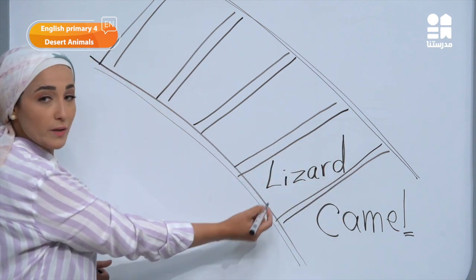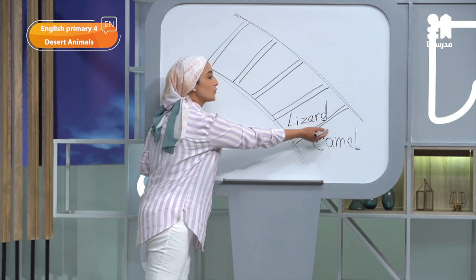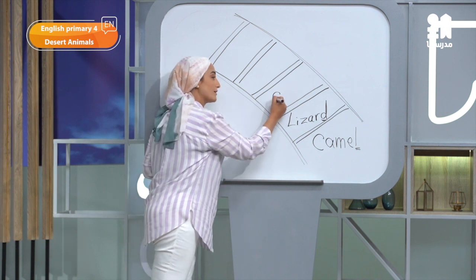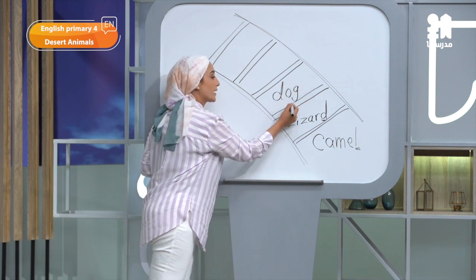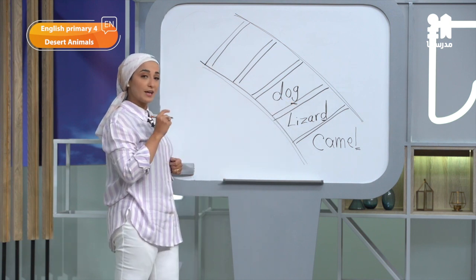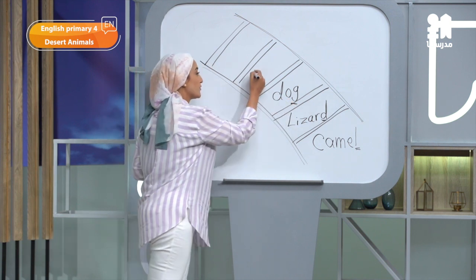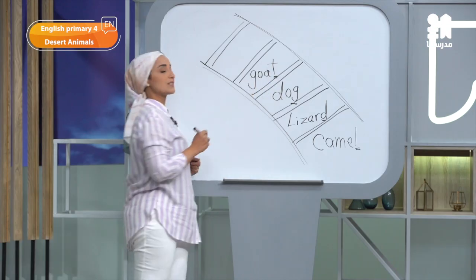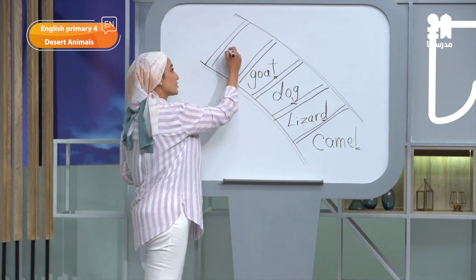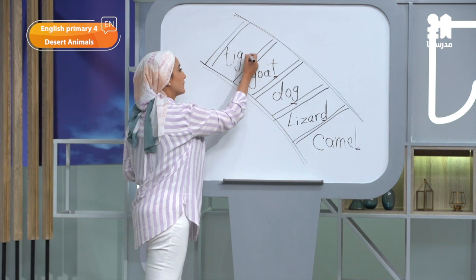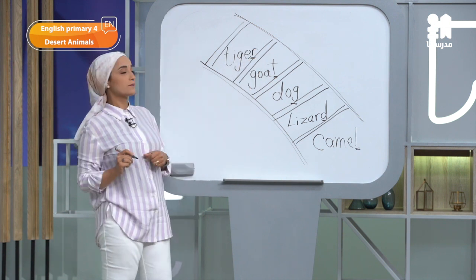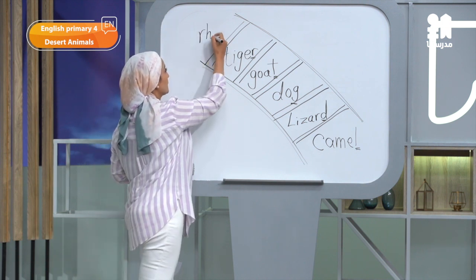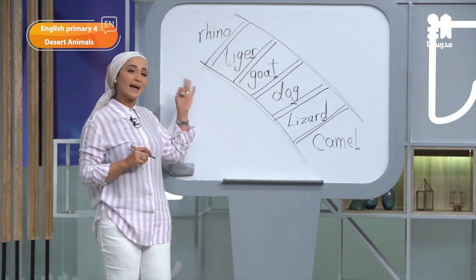Super. Lizard ends with D. Give me another animal's name starting with D. Excellent — Dog. It ends with G. Another animal starting with G — Goat. Very good. It ends with T. Tiger. Very good. This animal's name ends with R. So — Rhino. Yes, super.